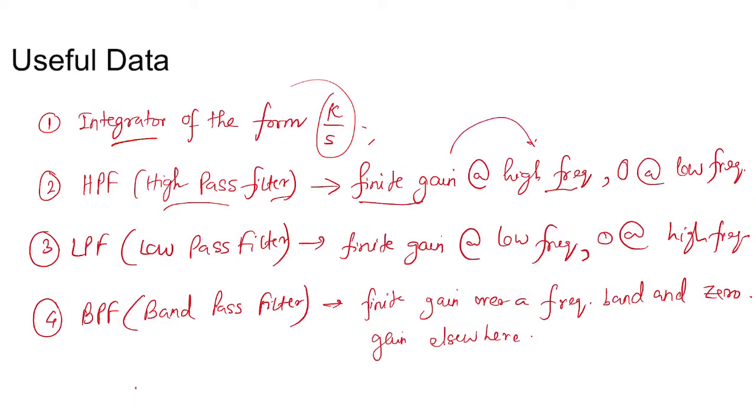For a low pass filter, it should provide finite gain at low frequency and zero gain at high frequency. For a band pass filter, it passes a finite band of frequencies and provides zero gain elsewhere.